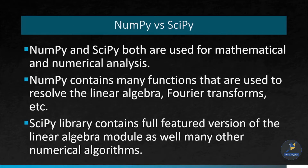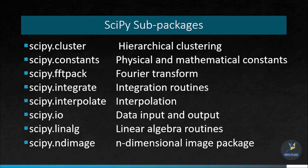What is the difference between NumPy and SciPy? NumPy is suitable for basic operations such as sorting, indexing and more because it contains array data. Whereas SciPy consists of all the numeric data. SciPy library is organized into sub-packages covering different scientific computing domains.